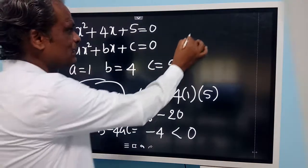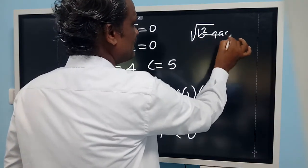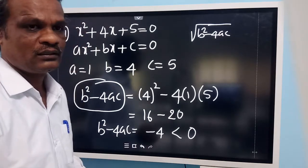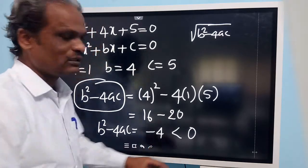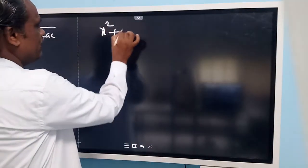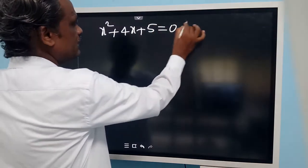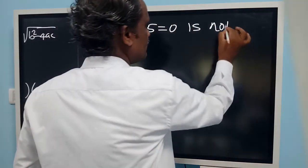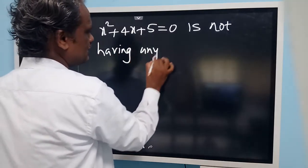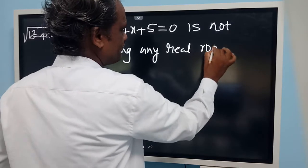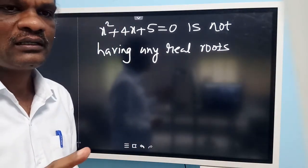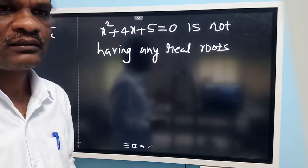Because inside the quadratic formula we have root of b squared minus 4ac. The square of any real number cannot be a negative number, so if we get a negative number under the root, no real roots exist. Therefore, x squared plus 4x plus 5 equals 0 does not have any real roots.